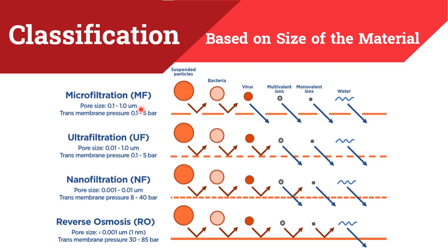In another classification based on size of material: microfiltration has a membrane pore size of 0.1 to 1 micrometer, where suspended particles and bacteria are retained, while virus, multivalent ions, monovalent ions, and water permeate. Ultrafiltration has a pore size of 0.01 to 0.1 micrometer, where suspended particles, bacteria, and virus are retained, but multivalent ions, monovalent ions, and water permeate. Nanofiltration has a pore size of 0.001 to 0.01 micrometer, where suspended particles, bacteria, and virus are retained, along with multivalent ions, while water permeates. Reverse osmosis has a pore size less than 0.001 micrometer — that is 1 nanometer — where all particles are retained except water.